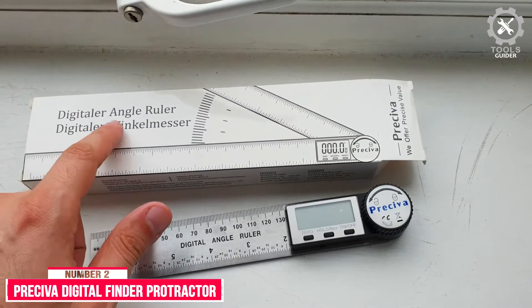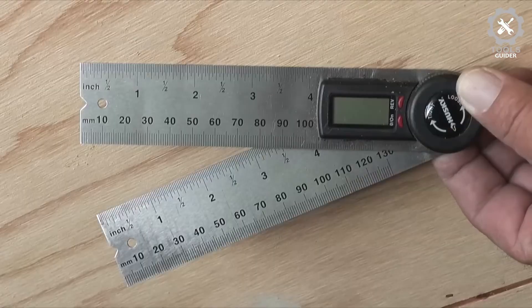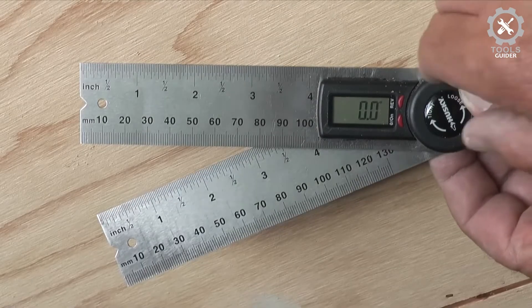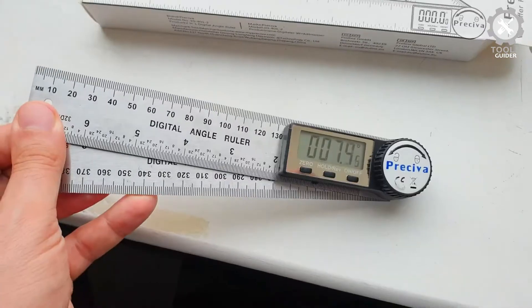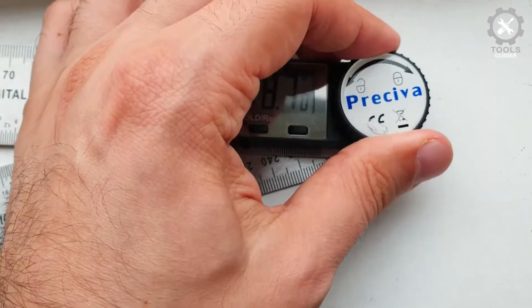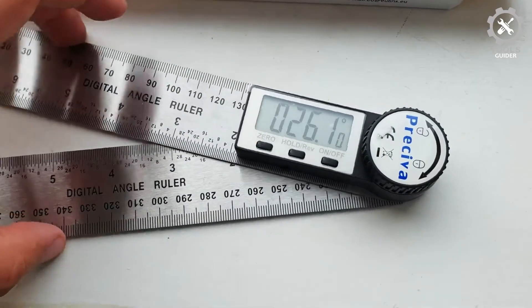The Prasiva Digital Finder Protractor has come up with a digital protractor that features a large LCD display that enables easy reading and has a measuring range of 0 to 999.9 degrees and accuracy of plus or minus 0.3 degrees.